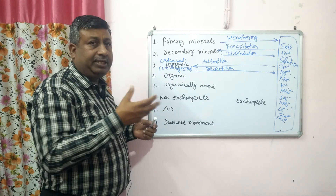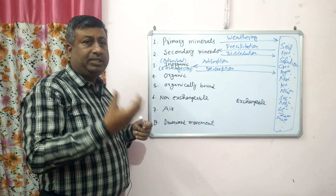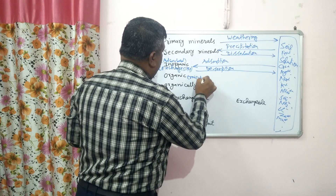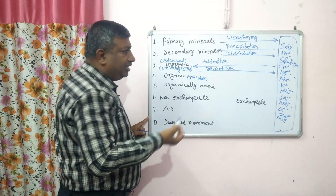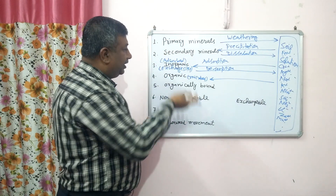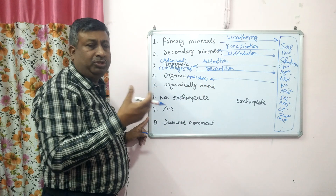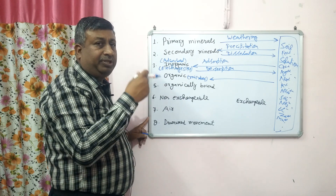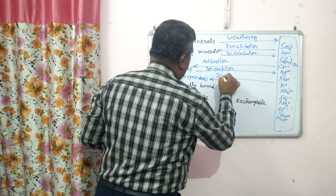Nutrients present in soil solution may be used by microbes for their body build-up, for their protoplasm, for cell synthesis, and this form is inorganic. Microbes use this nutrient for their body synthesis. When this inorganic form — for example, ammonium nitrate — is converted into protein, that is the organic form. This process is known as immobilization.